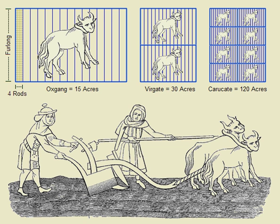Originally, an acre was understood as a selion of land sized at 40 perches (660 feet), or one furlong long and four perches wide. This may also have been understood as an approximation of the amount of land a yoke of oxen could plough in one day, a furlong being a furrow long. A square enclosing one acre is approximately 69.57 yards, or 208 feet 9 inches on a side. As a unit of measure, an acre has no prescribed shape; any area of 43,560 sq ft is an acre.